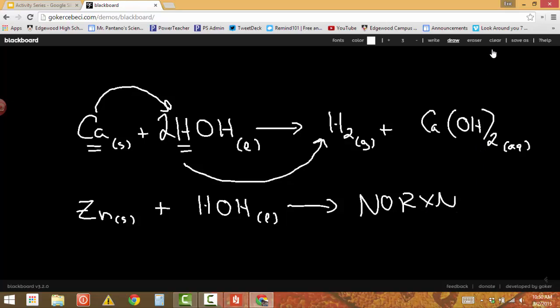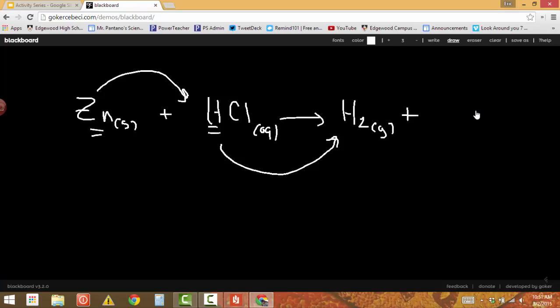But zinc will react with hydrogen in acid. If I put zinc with HCl, you did this one in lab, the zinc will replace the hydrogen. The hydrogen will come out as H2. The zinc will go into a compound with chlorine. Zinc is plus two, Cl is minus one, so ZnCl2 aqueous.